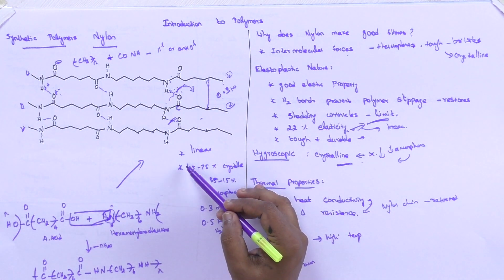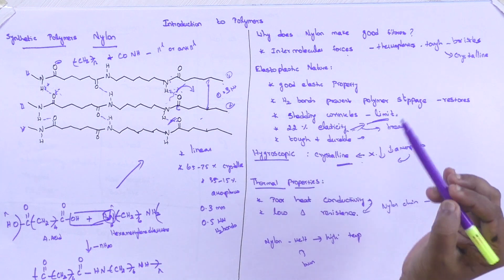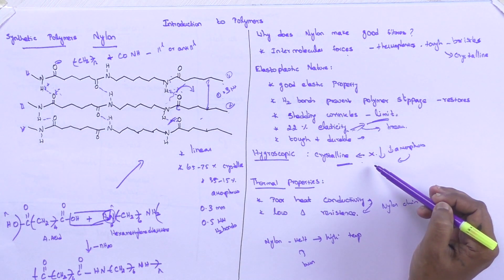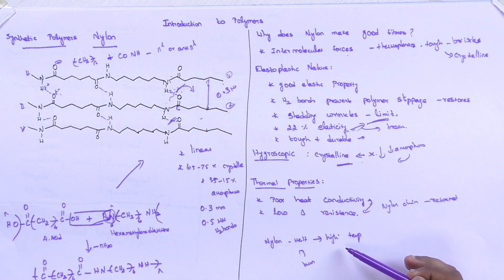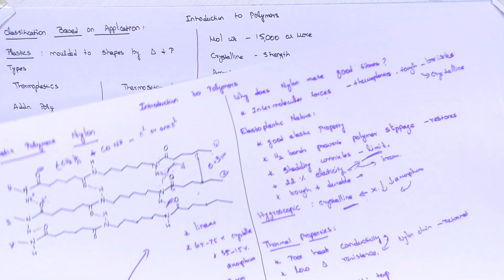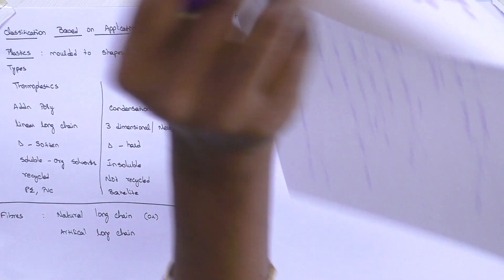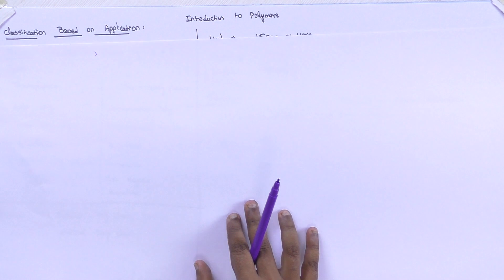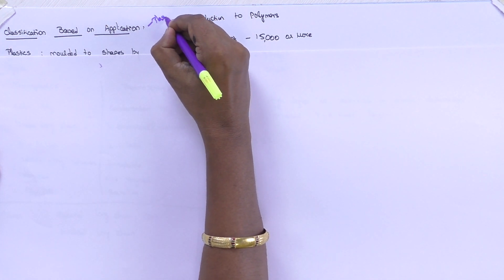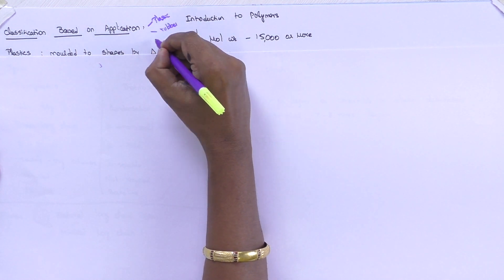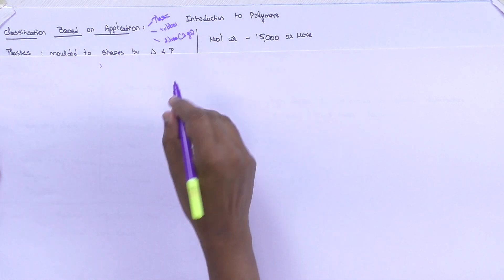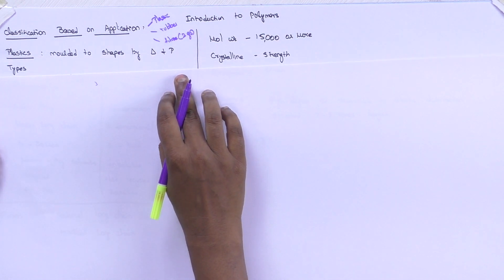So, for the synthetic polymer nylon, I have given you the chain structure, how it is formed, and why nylon makes a good fiber — its elastoplastic nature, hygroscopic nature, as well as its thermal property. Next, let us move on to classification based on application. Based on application, polymers are classified into plastics, rubber or elastomers, and fibers. We saw two fibers as examples — now we will move on to plastics.